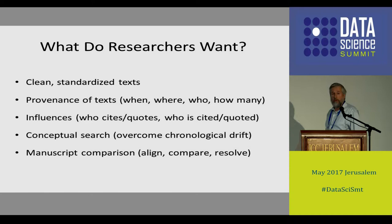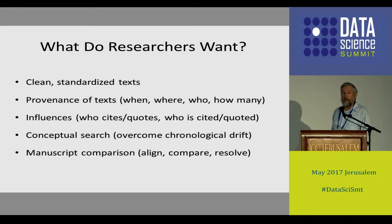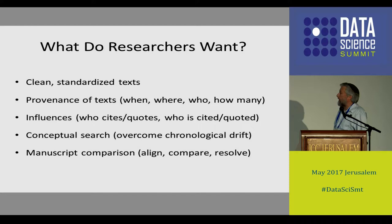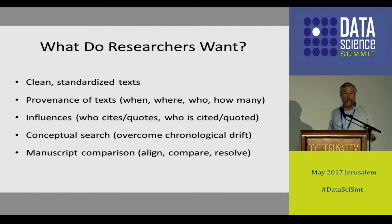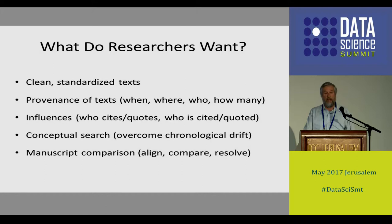We went and spoke to researchers in different departments of literature and history, and we asked them what they do and what kinds of tools they would like. We set about either helping them get better tools or replacing them. It turns out what they mostly need are clean texts with standardized orthography — a much bigger challenge than you think. Given some text found in an archive, you want to know the provenance: where it was written, when it was written, and ideally by whom. You want to know who influenced the text, which texts they borrowed from, and which texts borrow from them.